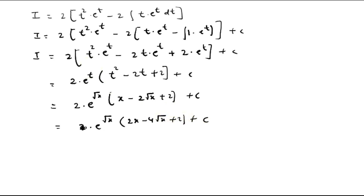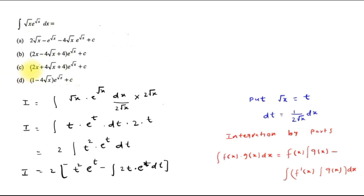This is our answer. Looking at the options, option B is the correct one: (2x - 4√x + 4)·e^(√x) + C. So option B is correct.